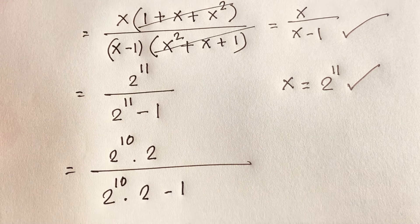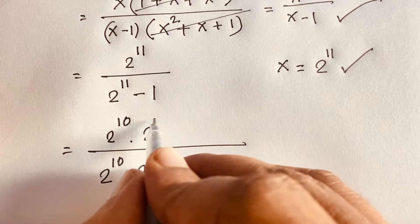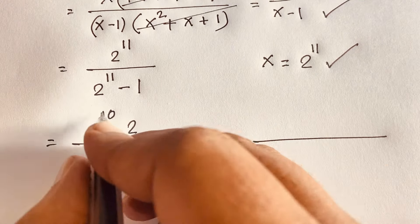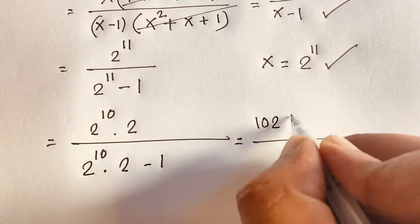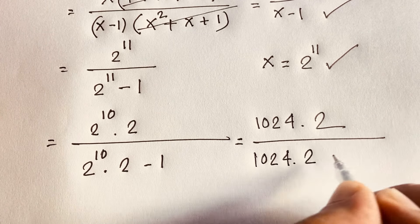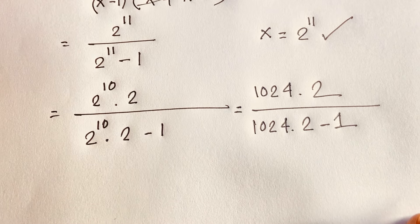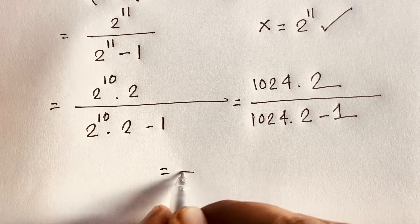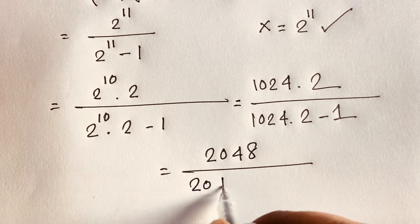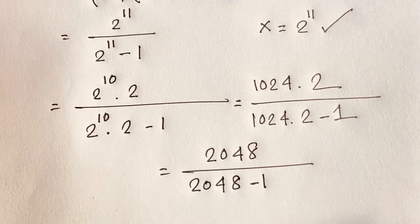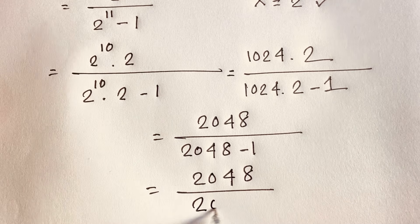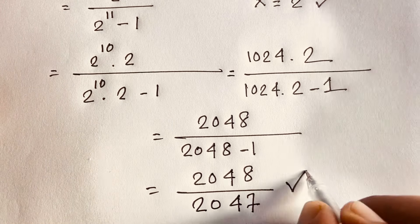Since 2 to the power 10 equals 1024, we get 1024 times 2 over 1024 times 2 minus 1, which is 2048 over 2048 minus 1. So the final answer is 2048 over 2047.